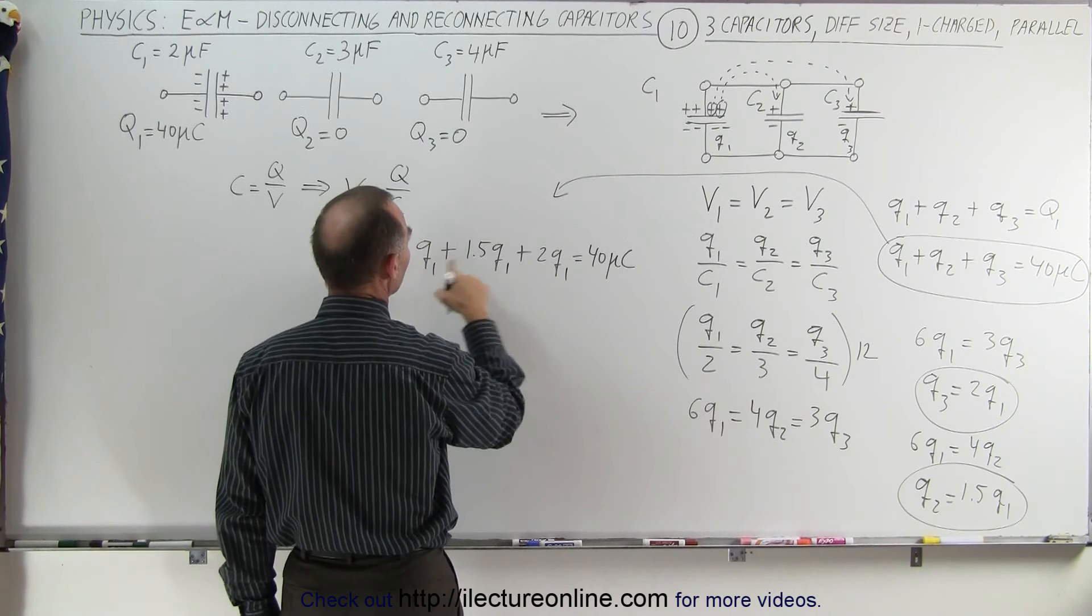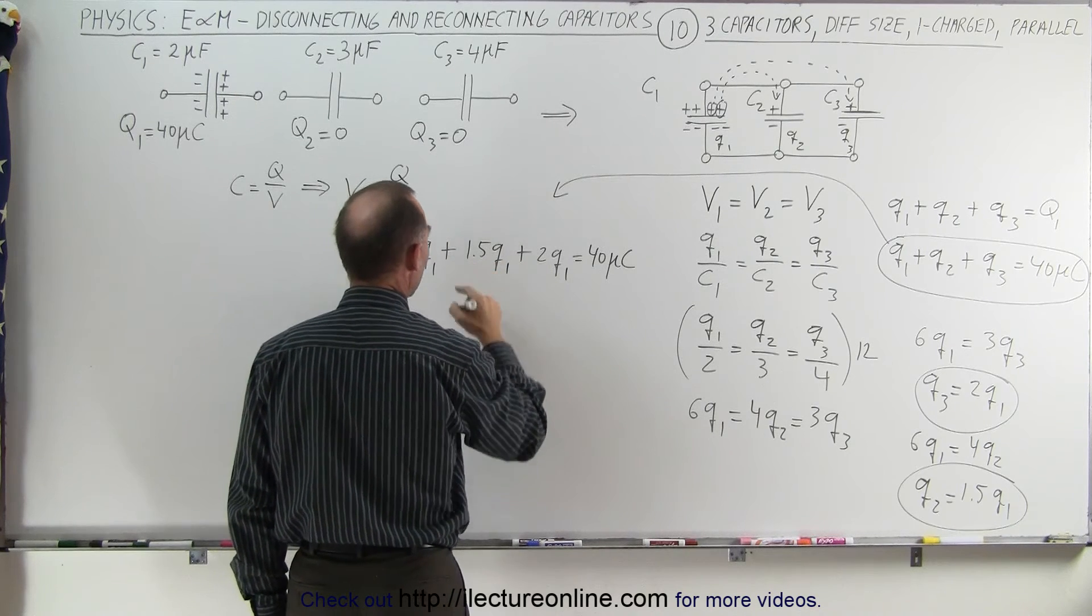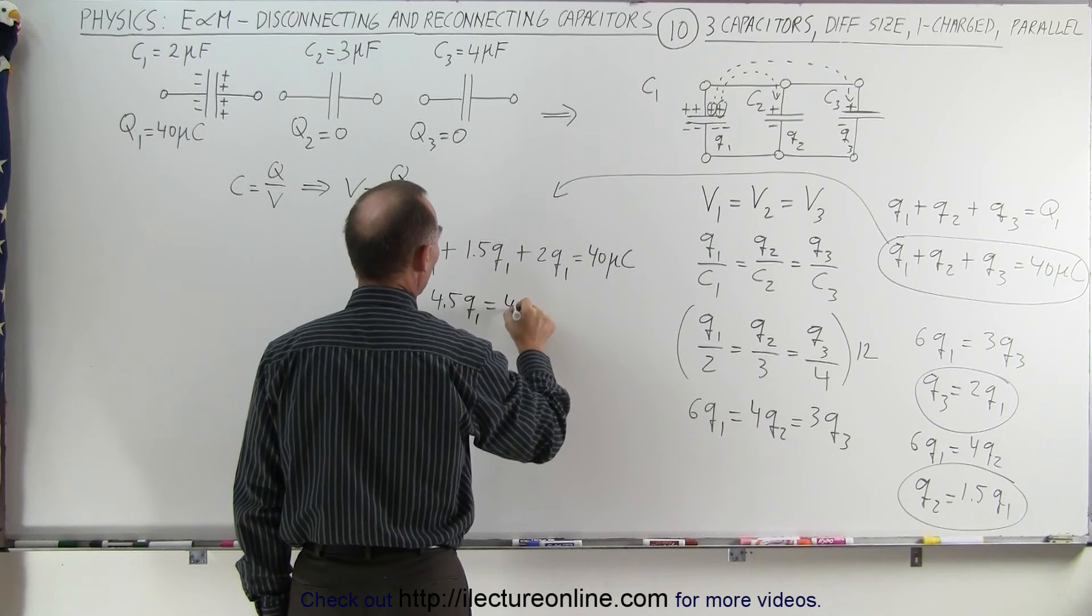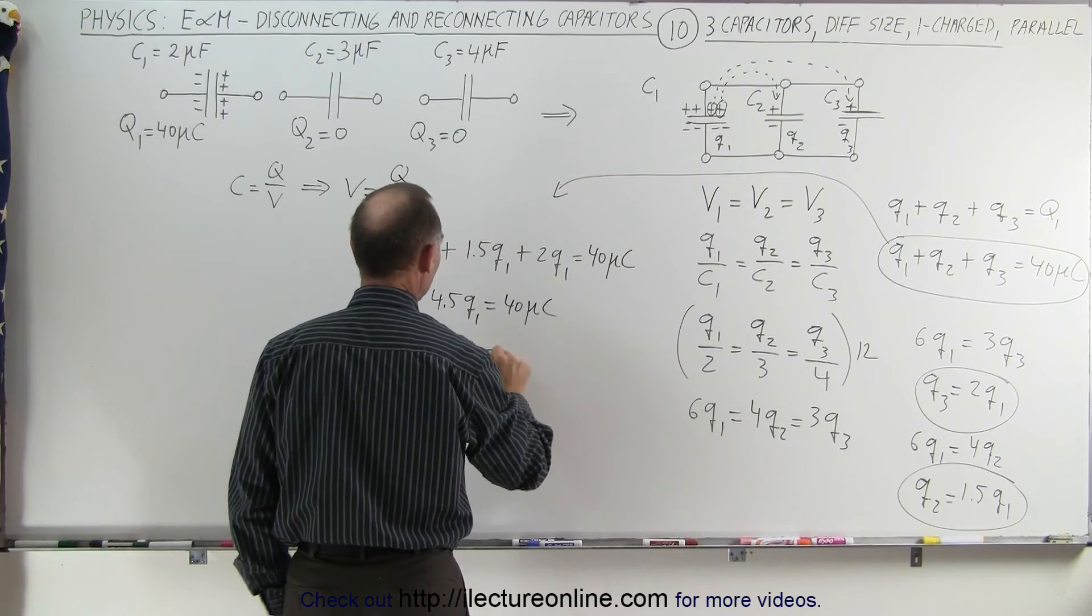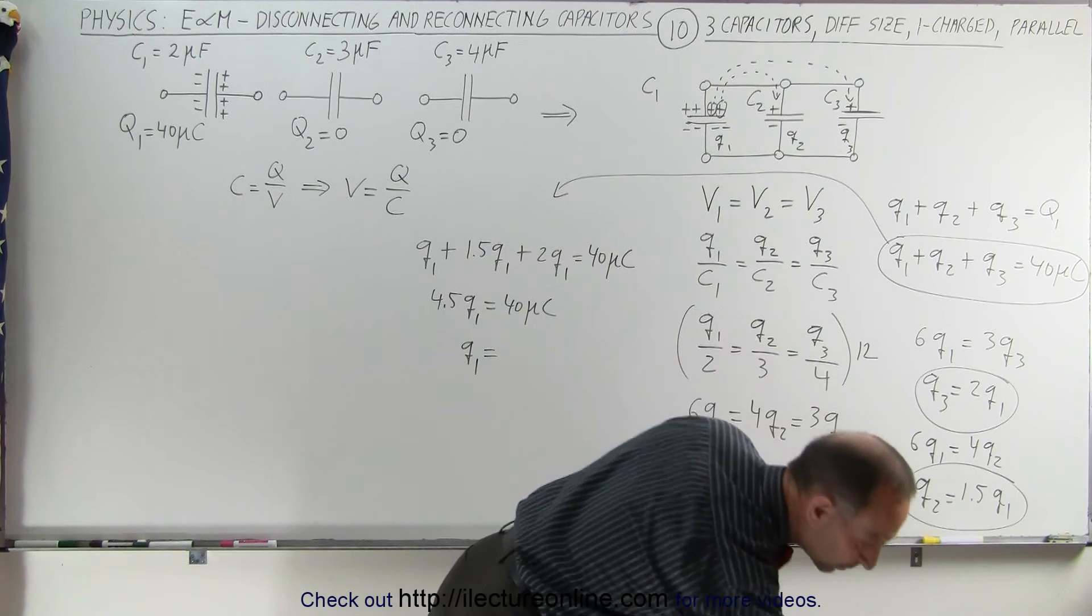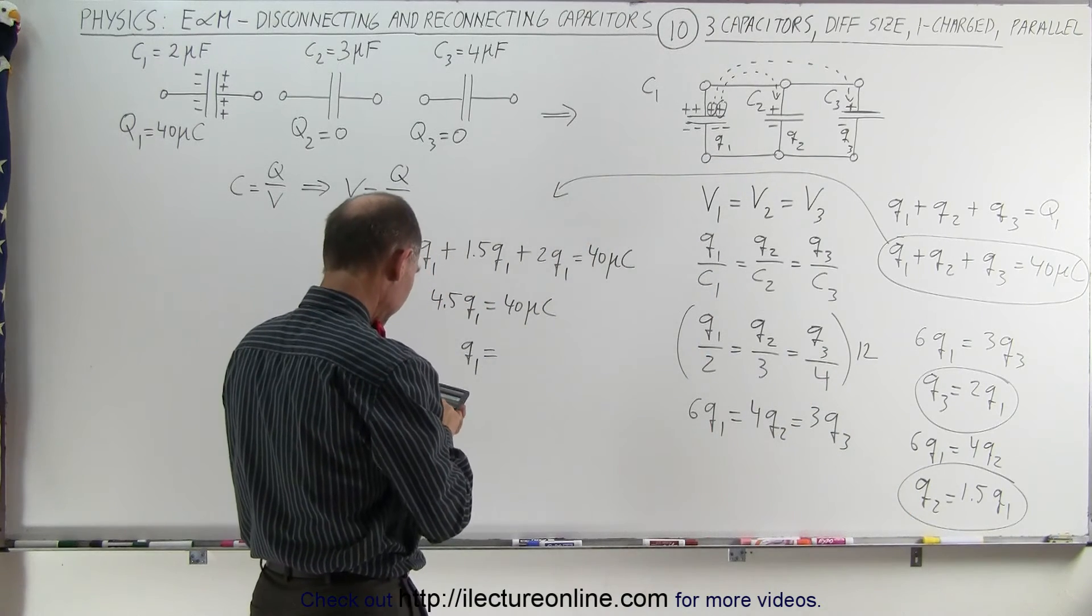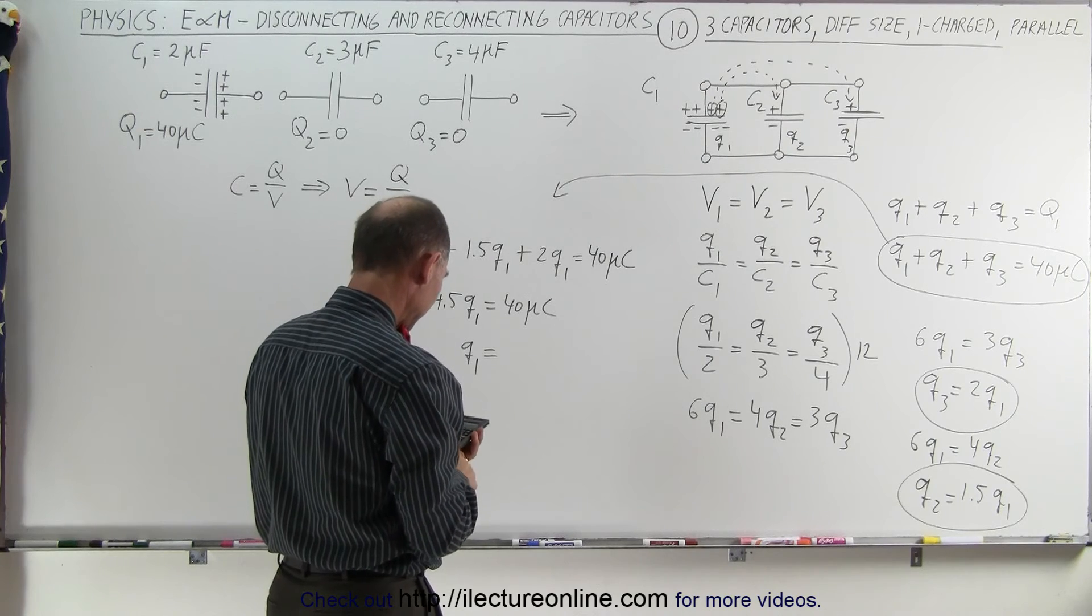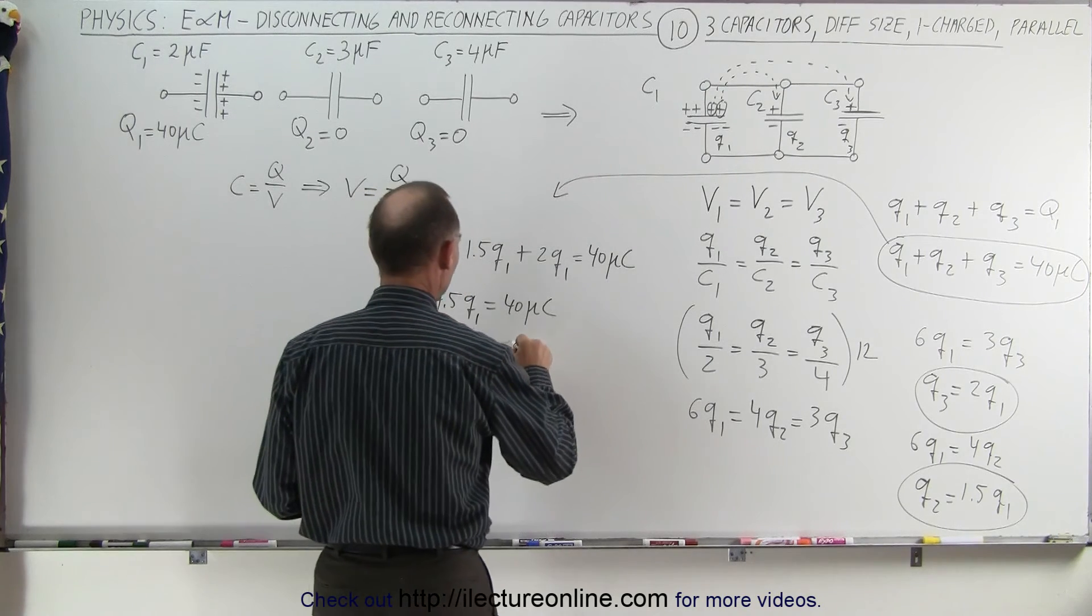Adding these together, 1 plus 2 is 3 plus 1.5 is 4.5, q1 is equal to 40 microcoulombs, or q1 equals 40 divided by 4.5 which gives 8.89 microcoulombs.